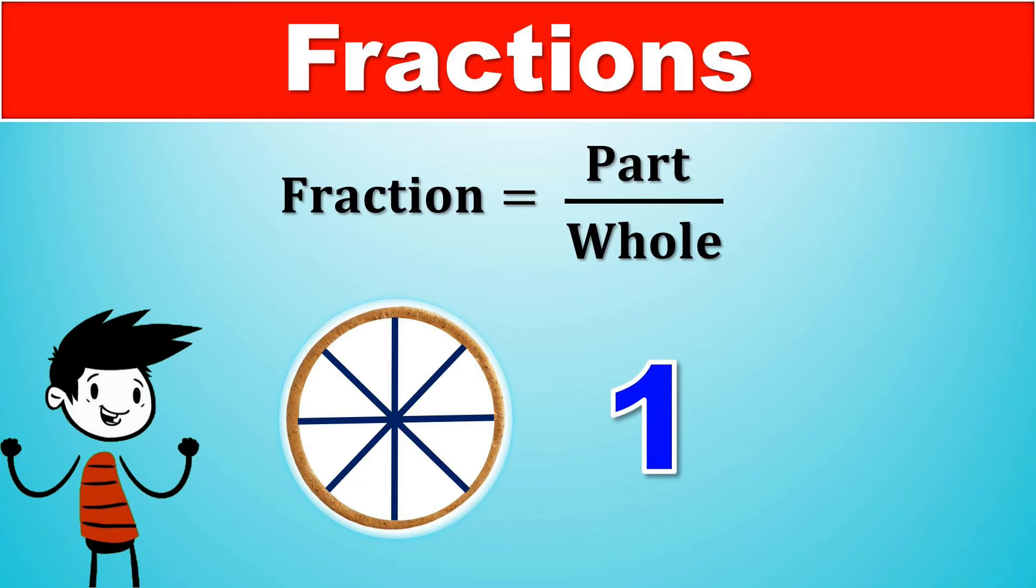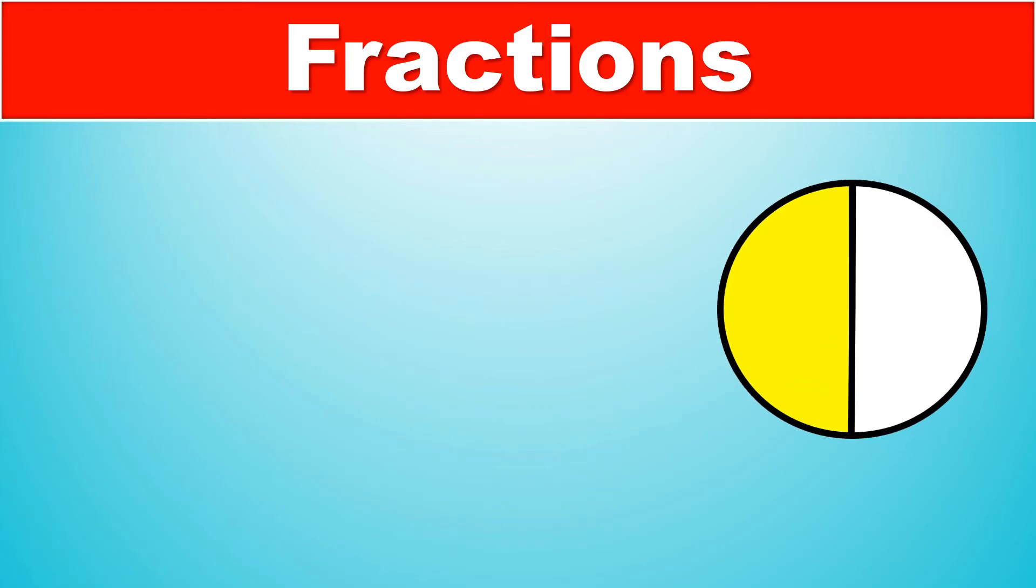Now let's take a look at what these top and bottom numbers mean in detail. Here we have another circle and this time we've split it into two parts. The fraction that represents the shaded part of this circle is one half, which you can write as one over two or one by two.